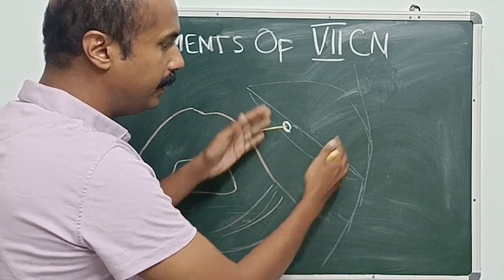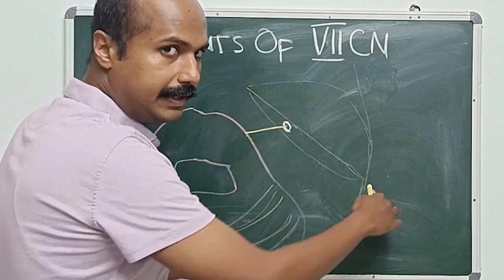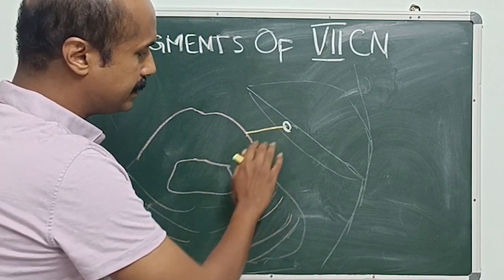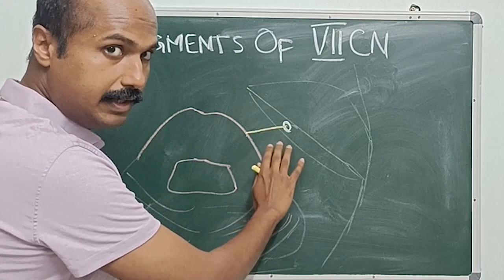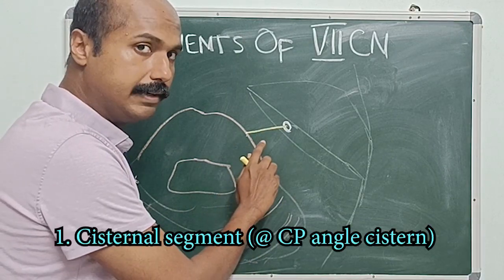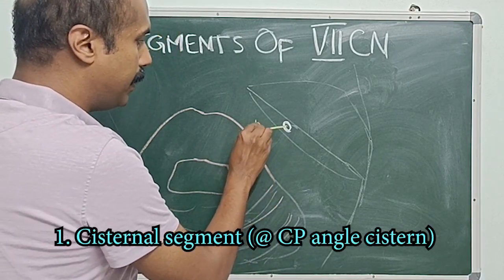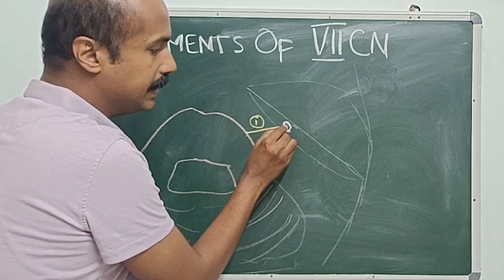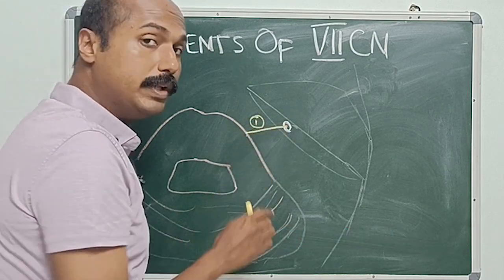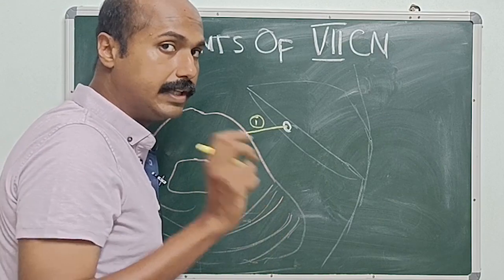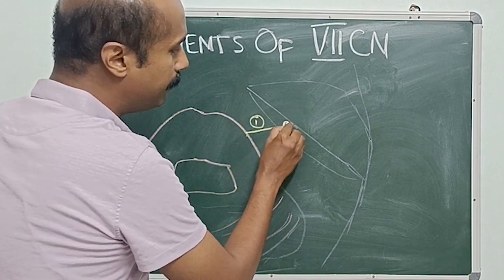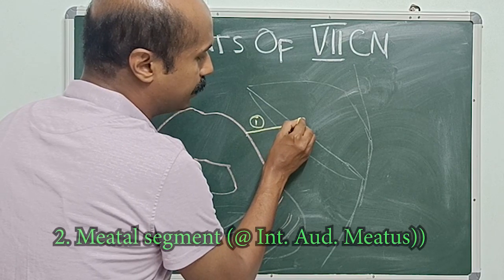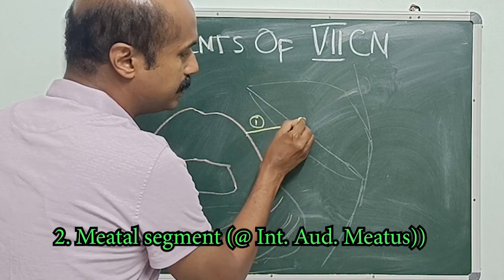Primarily, there are three segments: the intracranial, the intratemporal, and the extracranial. The intracranial part is in the cerebellopontine cistern, so it is also called the cisternal segment — that is the first segment. The cisternal segment slowly enters into the internal auditory meatus along with the eighth nerve and the labyrinthine vessels.